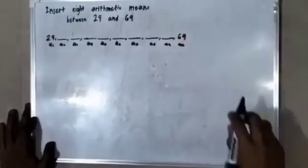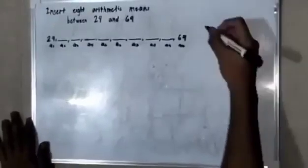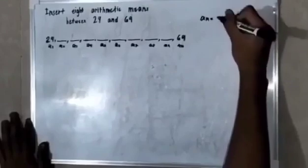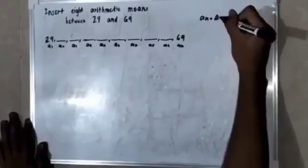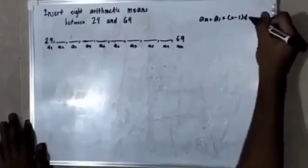To find the missing numbers, we will use this formula: a sub n is equal to a sub 1 plus n minus 1 times d.